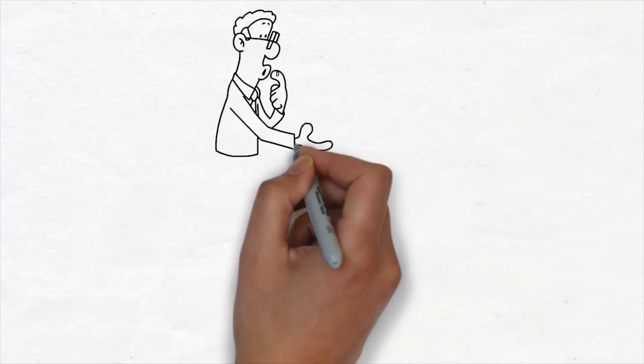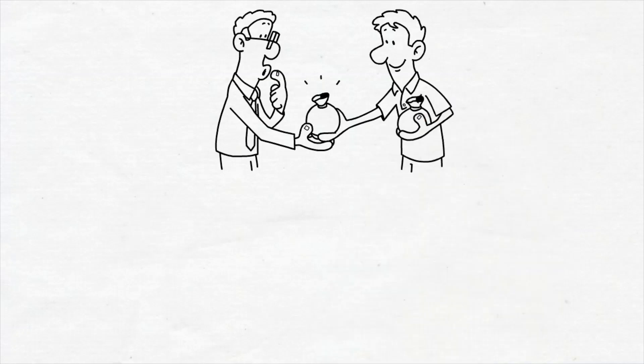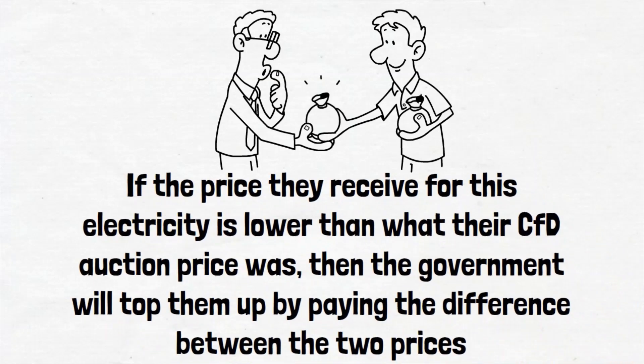Owners of these successful renewable generation sites will sell the electricity produced at their site into the wholesale electricity market. If the price they receive for this electricity is lower than what their CFD auction price was, then the government will top them up by paying the difference between the two prices. This provides the developers with some form of certainty of income, making the projects easier to finance, and it also helps the government meet our net zero targets by adding renewable generation to our network.